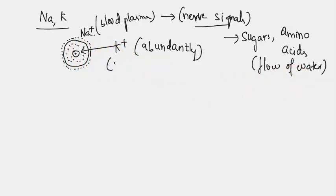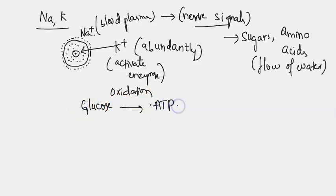Inside the cell we find potassium abundantly, and it has the efficiency to activate enzymes and participate in the oxidation of glucose to ATP. The food that we eat has to be broken down and converted into ATP form of energy so that we can use this for various purposes and various works during the day or night.